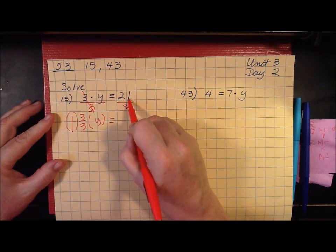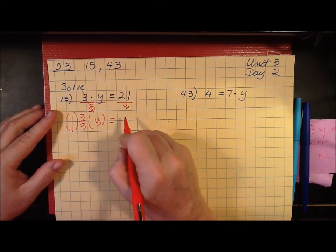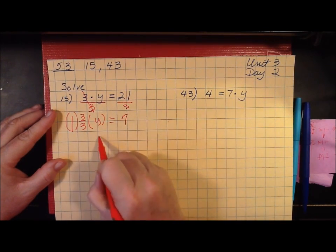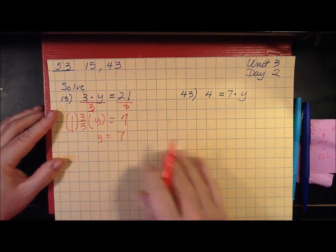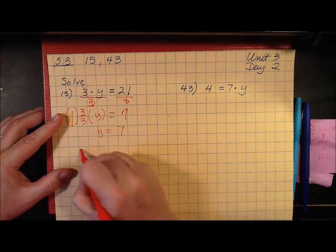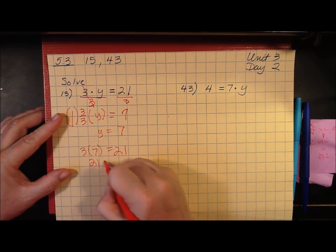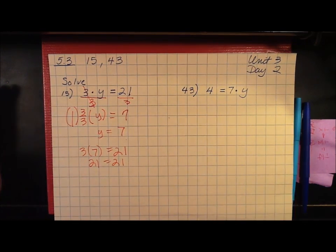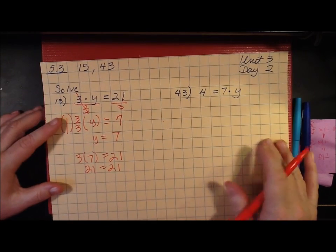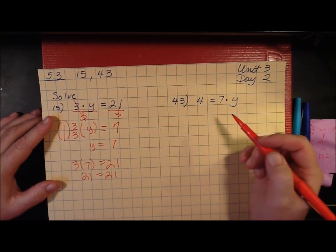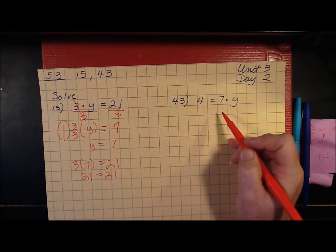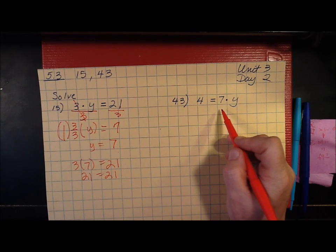What I do to this side, I must do to this side to keep it balanced. 3 goes into 21 7 times. So y equals 7. Let's go back and check. 3 times 7 equals 21. 21 equals 21. See, I could do that one.